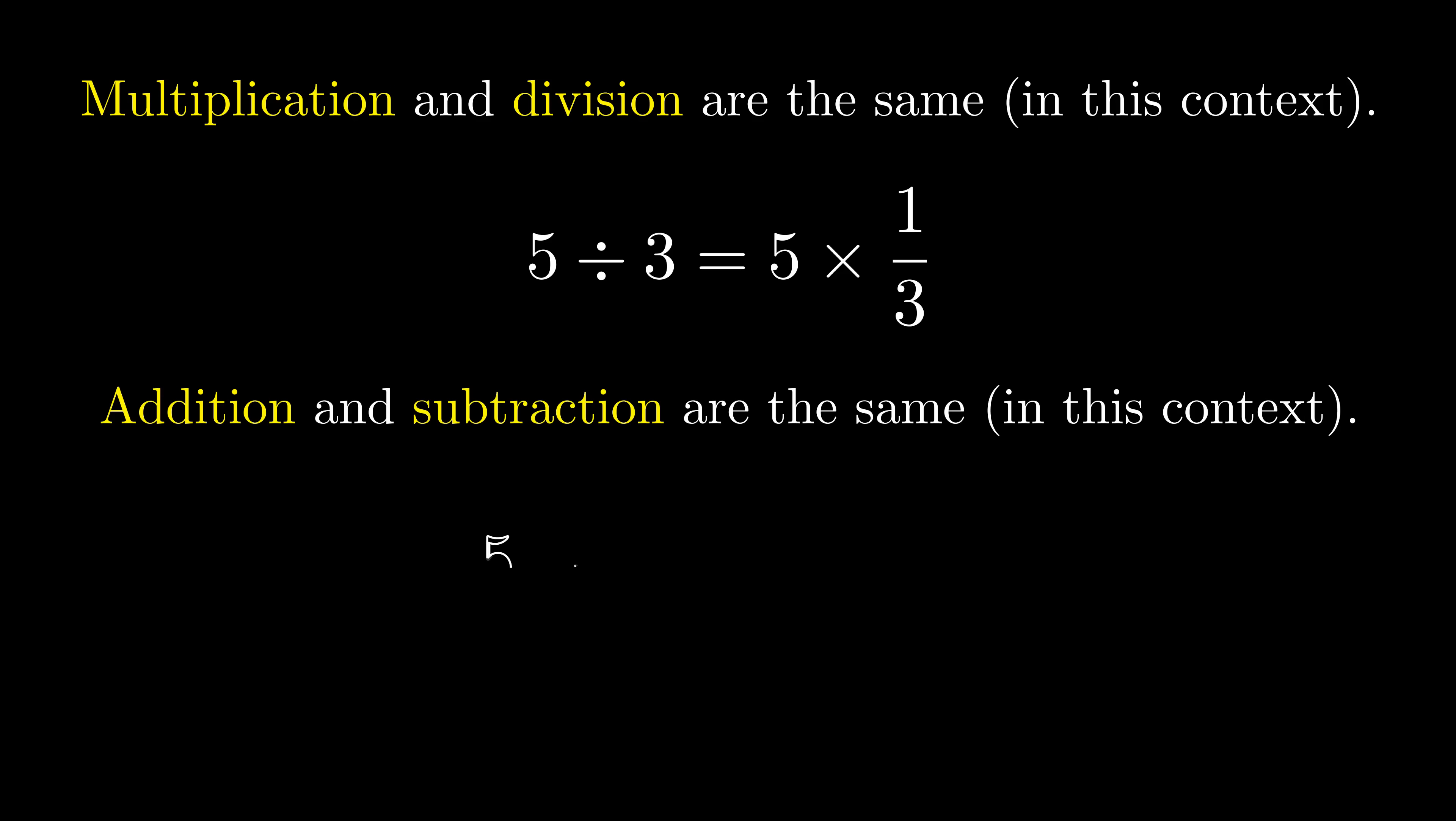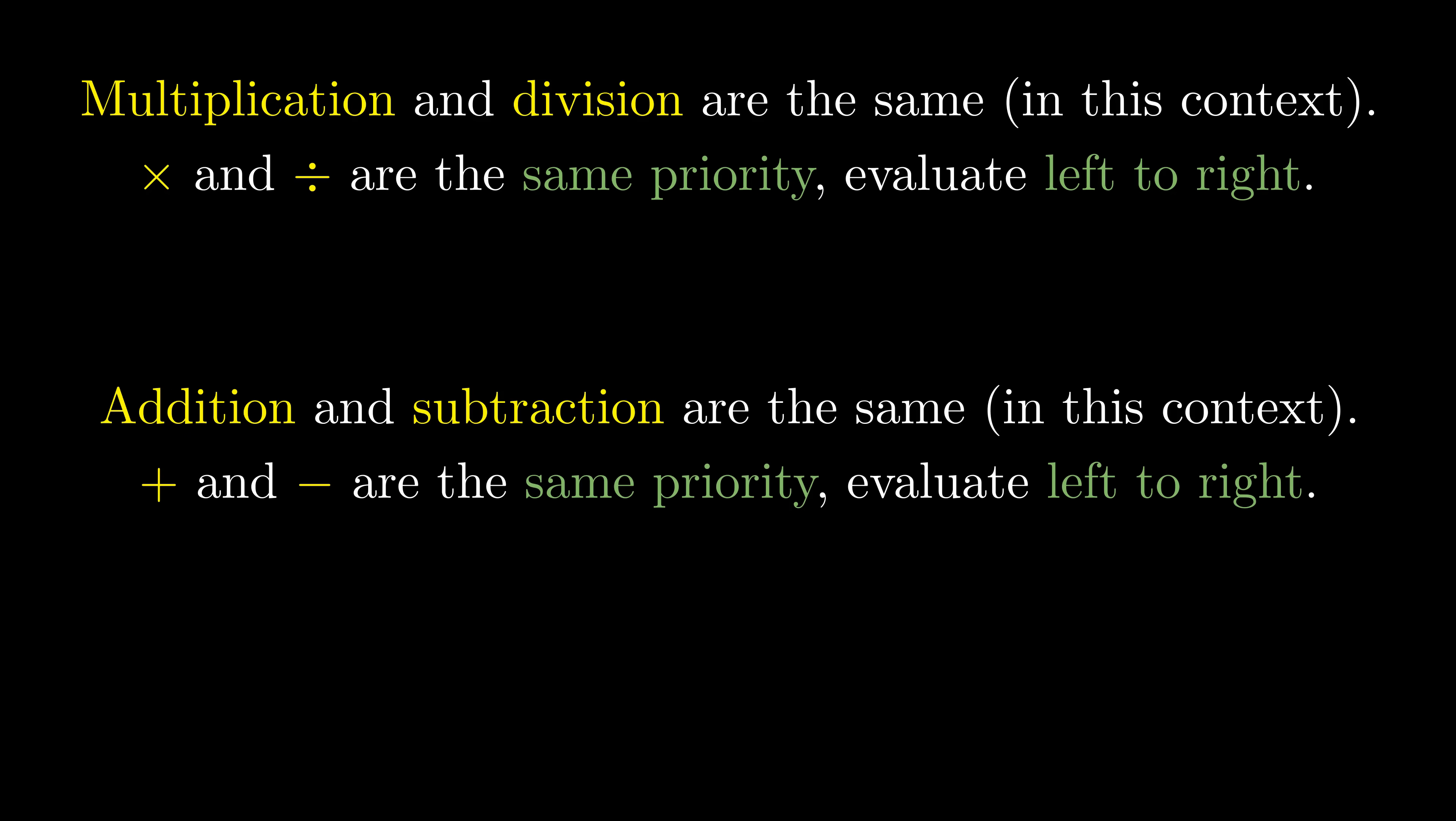But what about division and subtraction, you might ask? We treat division exactly the same way as multiplication, because dividing by a value is the same as multiplying by its reciprocal, so all divisions can be replaced with multiplication. Likewise, we treat subtraction the same as addition, because subtracting any value is the same as adding its negative. This is why in the order of operations, multiplication and division are treated as the same priority going left to right, and addition and subtraction are treated the same way.